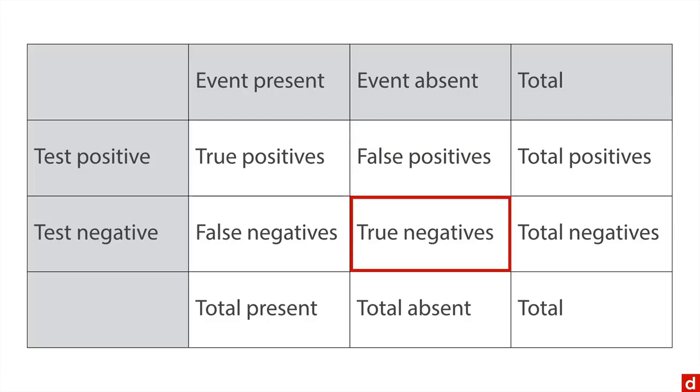And then below that, true negatives where the test says it isn't happening and that's correct, and then false negatives where the test says there's nothing going on but there is in fact the event occurring. And then you start to get the column totals, the total number of events present or absent, and the row totals that talk about the test results.